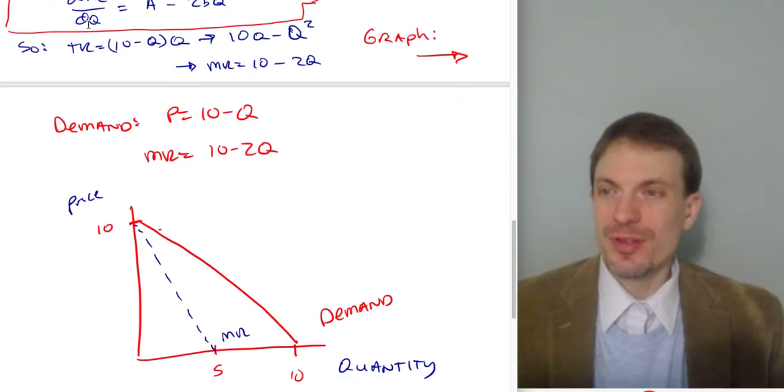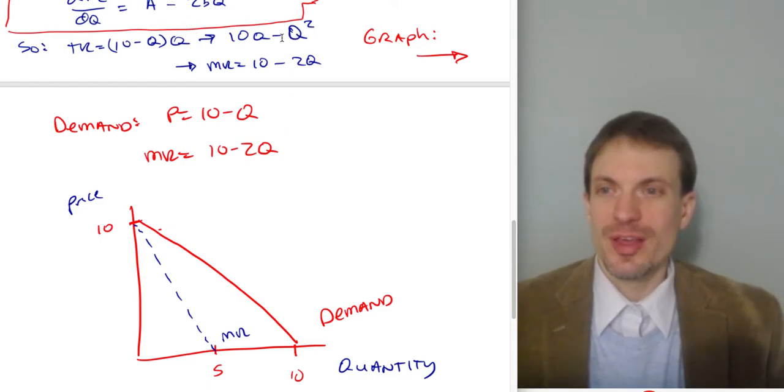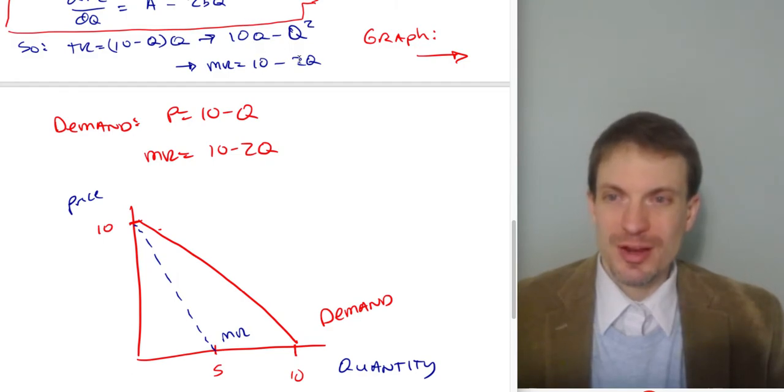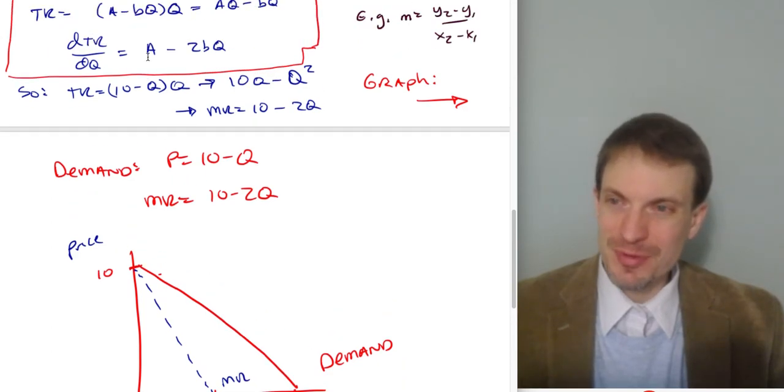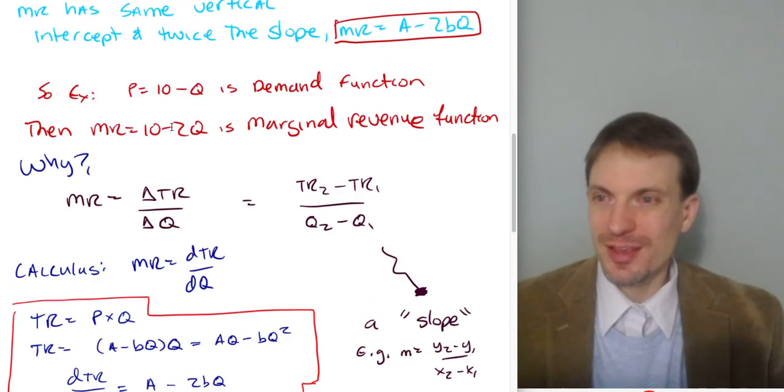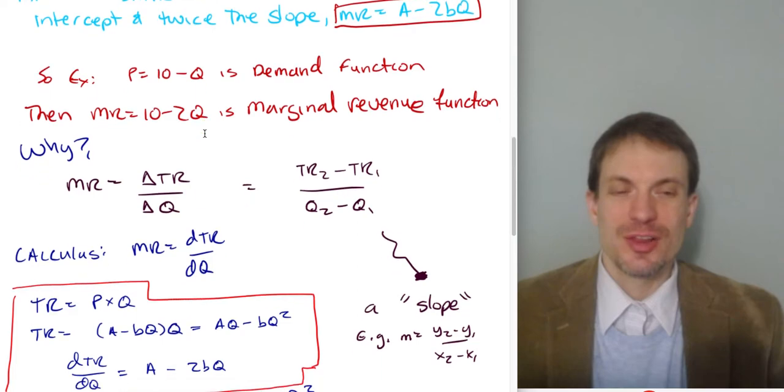TR, total revenue, is equal to inverse demand times quantity. So I'll distribute this Q. So I'll have 10Q minus Q squared. And then I'll take my derivative. Derivative of this is just going to be 10 minus 2Q. Oh, 10 minus 2Q, same vertical intercept, twice the slope as my demand curve. That's exactly where that's coming from.